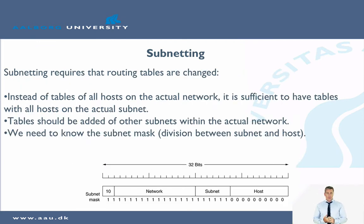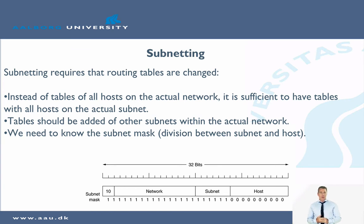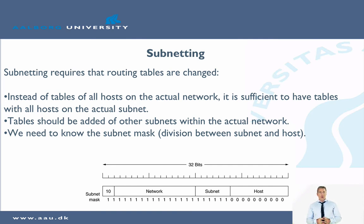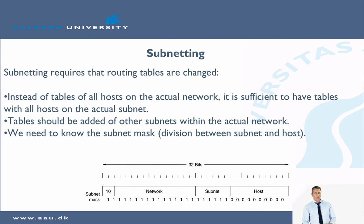With subnets, instead of maintaining tables of all hosts on the entire network, it is sufficient to have tables with all hosts on the actual subnet. Tables also need to reference other subnets within the network, and we need to know the subnet mask — the division between subnet and host. What you really do is split what was the host address space into a subnet space and a host space. You have the same number of networks as before, but within each class A, B, or C network, instead of a flat host space, you divide it into subnet and host portions.